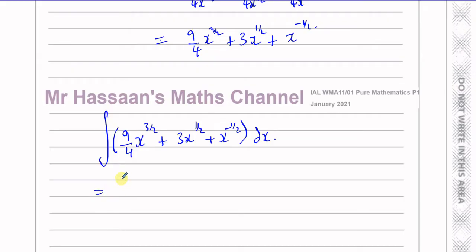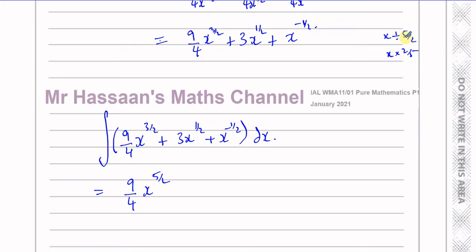So now I can do the adding to the powers and dividing by the new power. This is going to be 9/4 · x to the power of — I add 1 to the power, so 3/2 plus 1 is 5/2 — and I have to divide by 5/2. When you divide something by 5/2, it's the same as multiplying by 2/5, because in division you change to multiplication and flip the fraction. So dividing by 5/2 is like multiplying by 2/5.